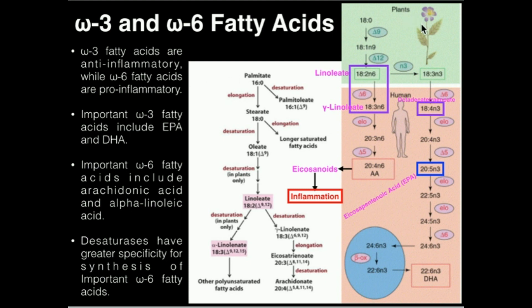Looking at another schematic: here is linoleic acid, which can be converted to gamma-linoleic acid — that's the transformation on the right. We can do this, then do elongation, another desaturation, and we have arachidonic acid. Arachidonic acid can be made into eicosanoids, which in general the vast majority promote inflammation. Eicosanoids fall in three general groups: prostaglandins, thromboxanes, and leukotrienes — with a few others we'll talk about in a later video.